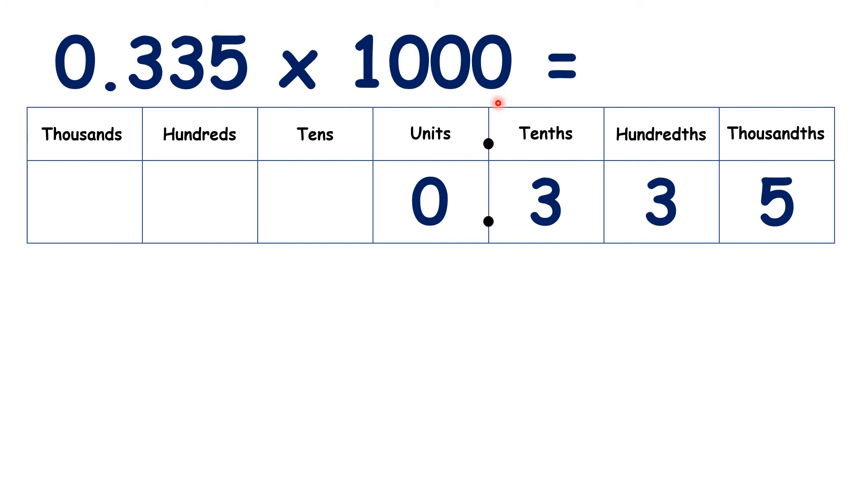What is 0.355 times 1,000? We move the digits, ignore this leading 0, and we have 335.